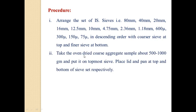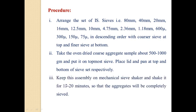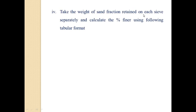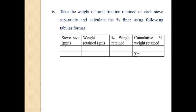Next, take oven dried coarse aggregate sample about 500 to 1000 gram and put it on the topmost sieve. Then place the lid at the top and pan at the bottom. Keep this assembly on a mechanical sieve shaker and shake it for 15 to 20 minutes so that the aggregate will be completely sieved. Then take the weight of sand fraction retained on each IS sieve separately and calculate the percentage finer using the following tabular format.